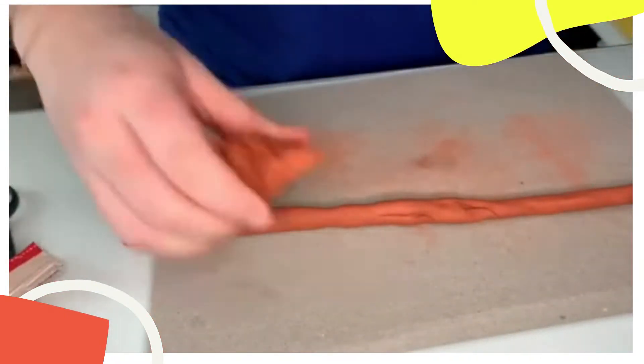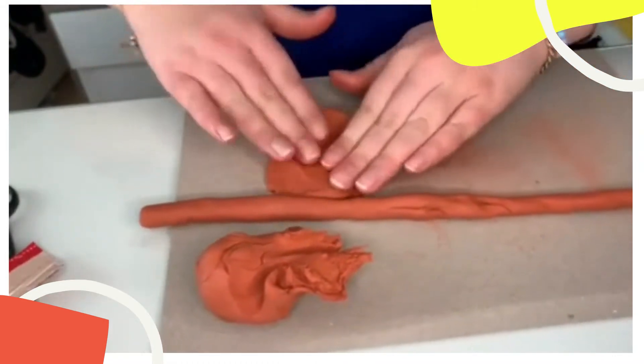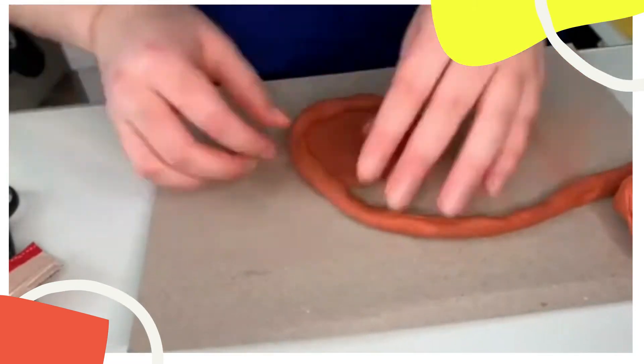Then I went in to make my base of my pot. I rolled it into a little ball and then flattened it out as much as I could, not too thin though. You don't want to have it too thin.